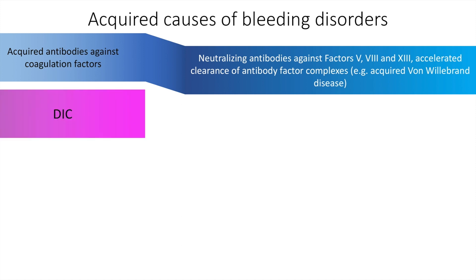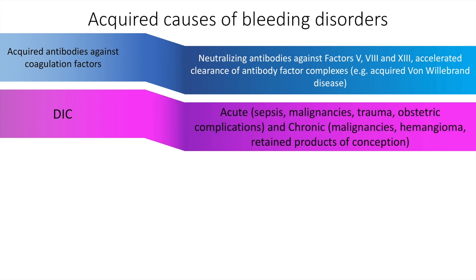Disseminated intravascular coagulation may be due to acute causes such as sepsis, malignancies, trauma, and obstetric complications, or chronic as seen in hemangiomas, malignancies, and abruptio placenta.